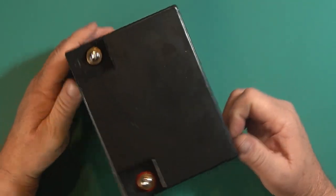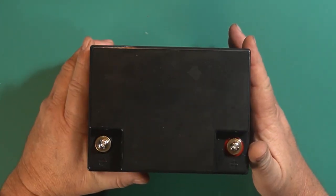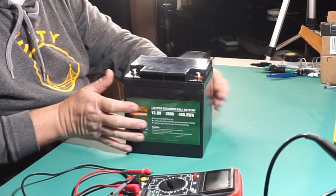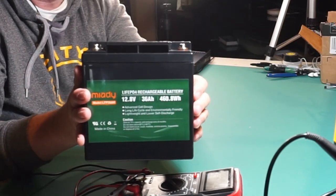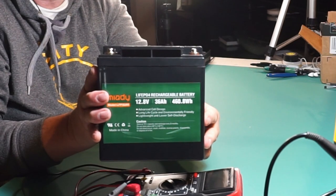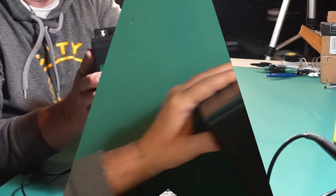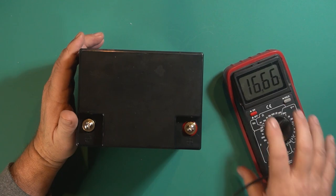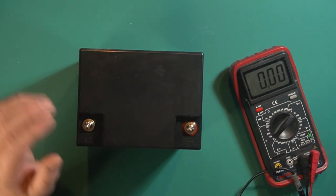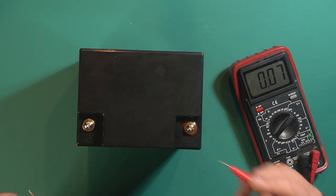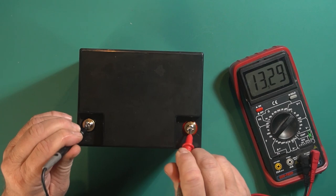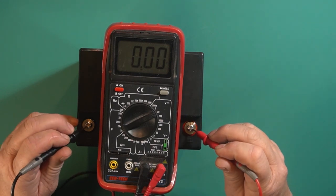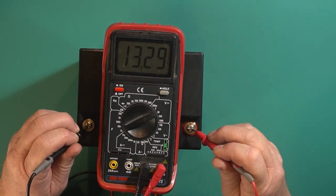Let me grab a multimeter and check out what the charge is on this thing. Hopefully you guys can see that. This is another view of it. I've got my multimeter here set on 20 volts. Positive side, negative side. 13.29 volts. So that's a pretty good charge.